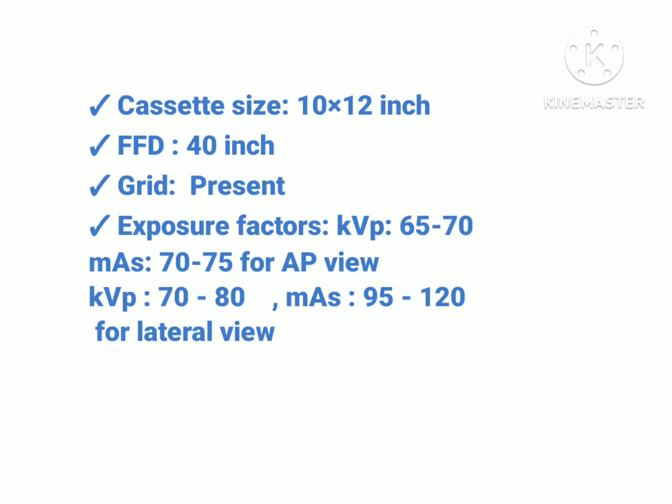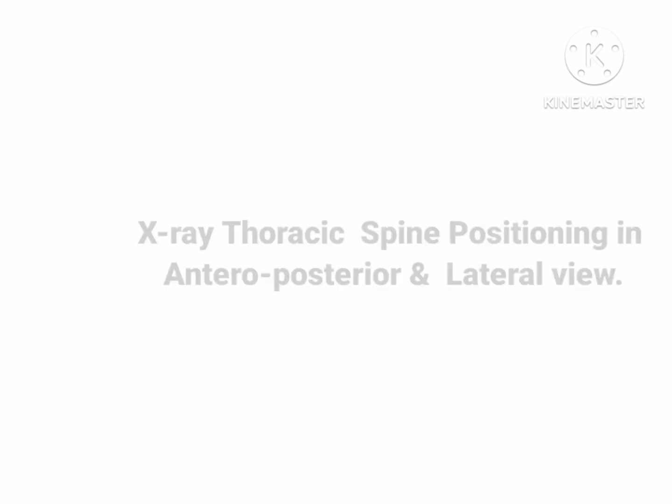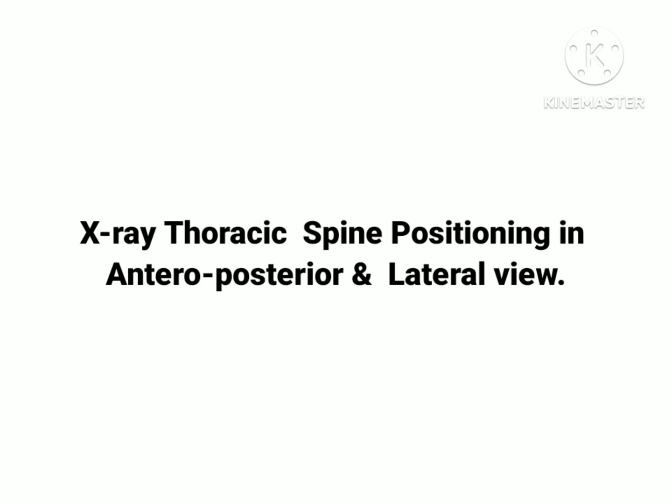Regarding cassette size, the cassette size used in X-ray thoracic spine is 10 by 12 inch film. Focal distance is 14 inches. A grid is present in this X-ray of the spine. Exposure factors: kVp 65 to 70 and mAs 70 to 75 for AP view, and kVp 70 to 80 and mAs 95 to 120 for lateral view. We are discussing two basic views of thoracic spine — the anterior posterior view and the lateral view — both having different exposure factors.